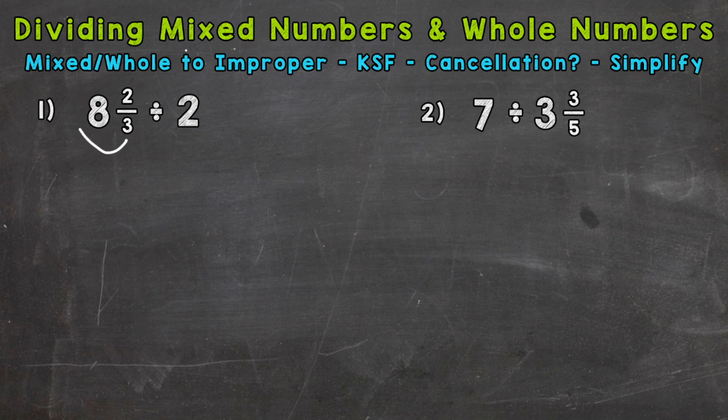So let's start with our mixed number here. We'll start at the bottom and work our way to the top. We multiply and then add. We do 3 times 8, which is 24, plus 2, which is 26. That's our numerator. We keep our denominator of 3 the same. So we get 26 over 3. So that's our equivalent improper fraction there. Let's bring our division sign down.